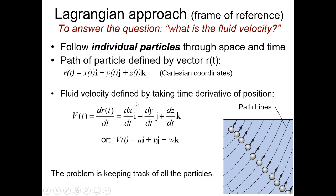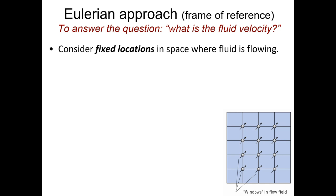The challenge with the Lagrangian approach is that for most systems, it's not practical to keep track of all fluid particles. Even a small diameter pipe will have many trillions of water molecules flowing through a point every second. So the Lagrangian approach is usually abandoned in the real world. Instead, the Eulerian approach is used, which creates a mesh or grid and looks at certain locations where fluid flows through.